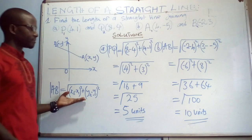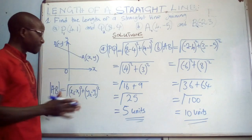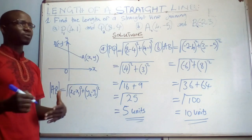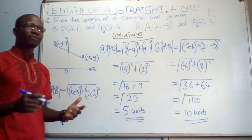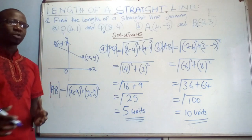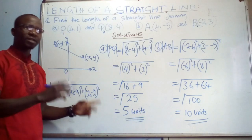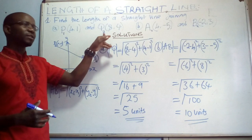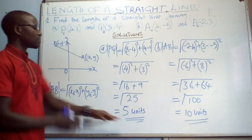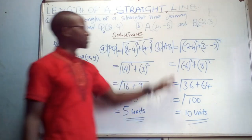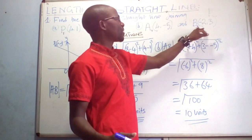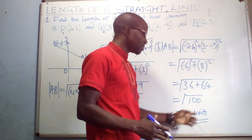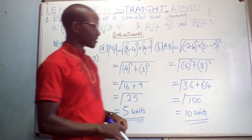This marks the end of the lesson. Remember: x₁ comes from point one, x₂ from point two, y₁ from point one, and y₂ from point two. The assignment of point one and point two is important — however, even if you swap them, the answer will still come out the same. Whether this is point one or point two, the answer remains 10 units regardless of your apportionment.